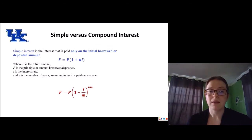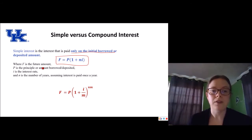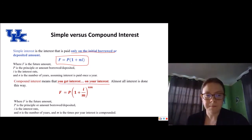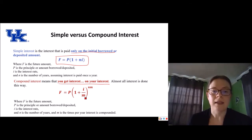Simple versus compound interest. Simple interest is the interest paid only on the initial borrowed or deposited amount. The equation uses F for the future amount, P for the principal or amount borrowed, I for the interest rate, and N for the number of years — assuming interest is paid once a year. Compound interest means you get interest on your interest, and almost all interest is done this way. With compound interest, F is the future amount, P is the principal borrowed, I is the interest rate, M is the number of times per year the interest is compounded, and N is the number of years.